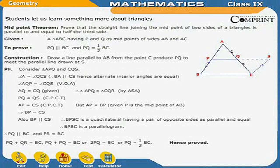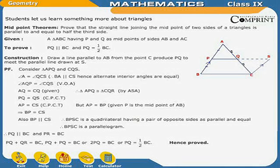Students, let us learn something more about triangles. Midpoint Theorem: Prove that the straight line joining the midpoints of two sides of a triangle is parallel to and equal to half of the third side. Given: a triangle ABC having P and Q as midpoints of sides AB and AC. To prove: PQ is parallel to BC and PQ is equal to half of BC.